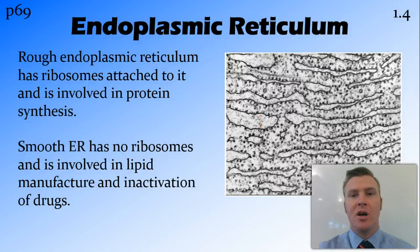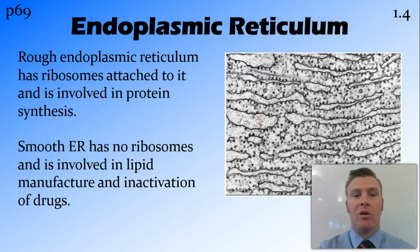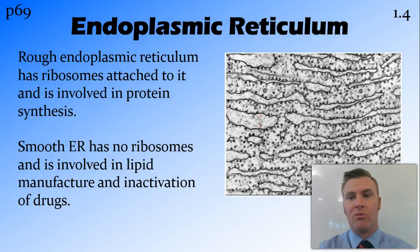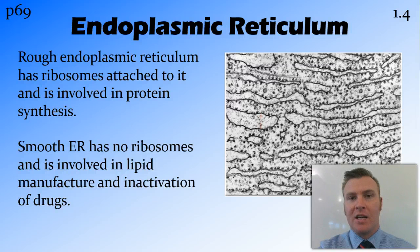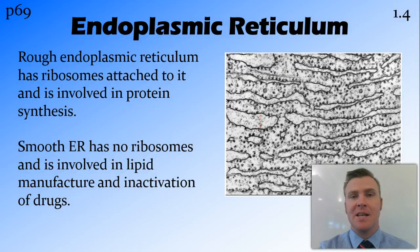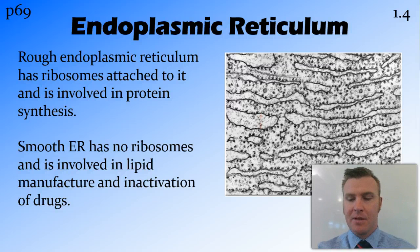There are two types of endoplasmic reticulum. The rough endoplasmic reticulum is bound with a whole heap of ribosomes — you can see it is rough because you can see the circular ribosomes — and it is involved in protein synthesis. The smooth endoplasmic reticulum doesn't have any ribosomes and is involved in lipid manufacture, or fat synthesis, as well as the inactivation of drugs.